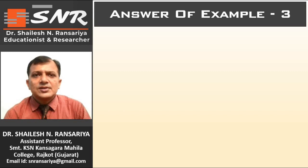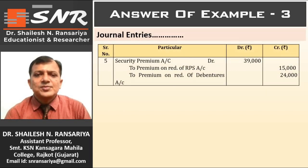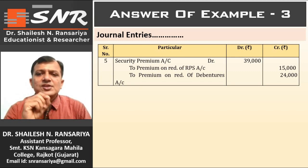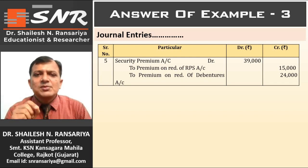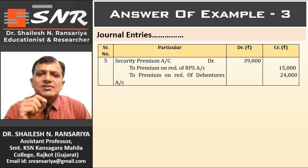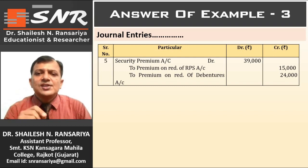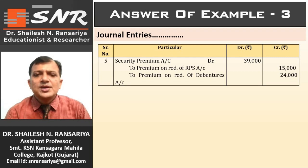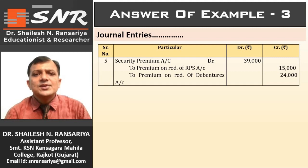Next entry is for the write-off of premium on redemption of preference shares and premium on redemption of debentures. This premium can be written off against the balance of security premium. Security premium is available in the balance sheet and also from the new shares issued. So, the entry is: Security premium account debit Rs. 39,000; To premium on redemption of RPS account credit Rs. 15,000; To premium on redemption of debenture account credit Rs. 24,000.